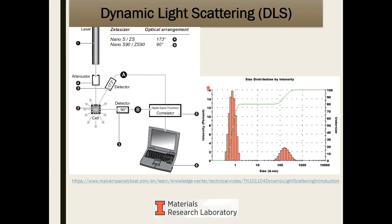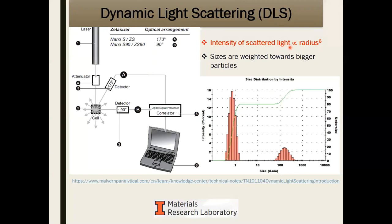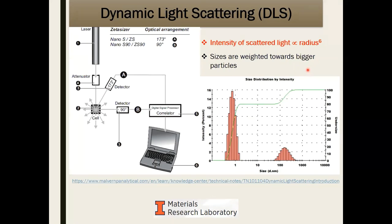If you remember nothing else about light scattering: the intensity of scattered light is proportional to the radius of the particle to the sixth power. If you have two particles and one is twice as big as the other, the larger particle will scatter 64 times more light than the smaller one. This means the technique is heavily weighted toward larger particles — even just one large particle can significantly affect your data and analysis. Remember: light scattering intensity is directly proportional to the radius to the sixth power.